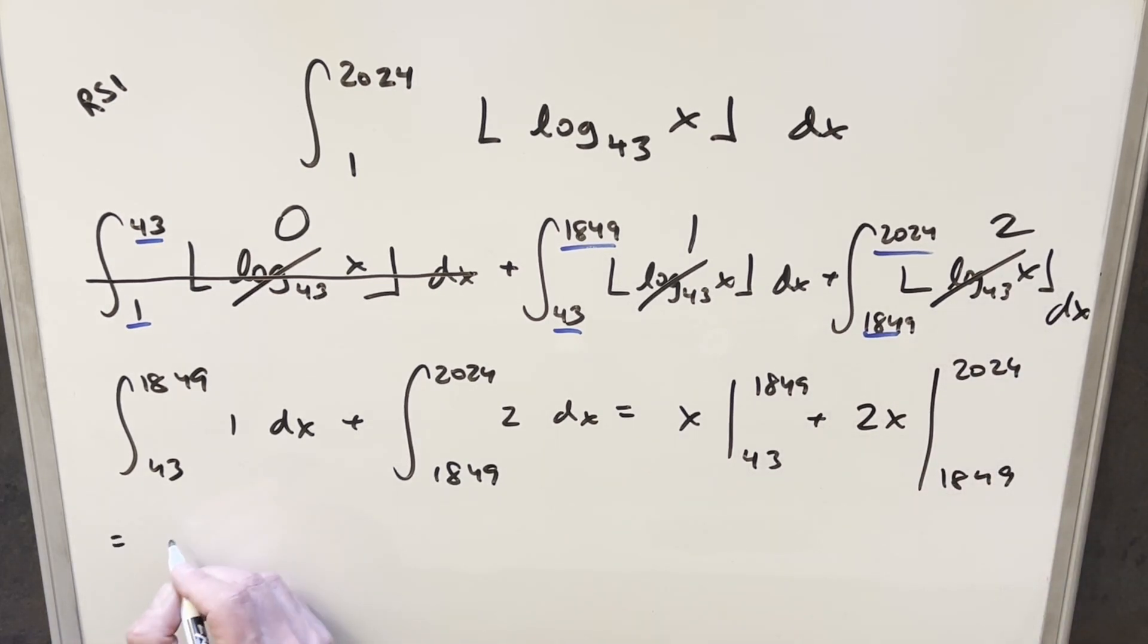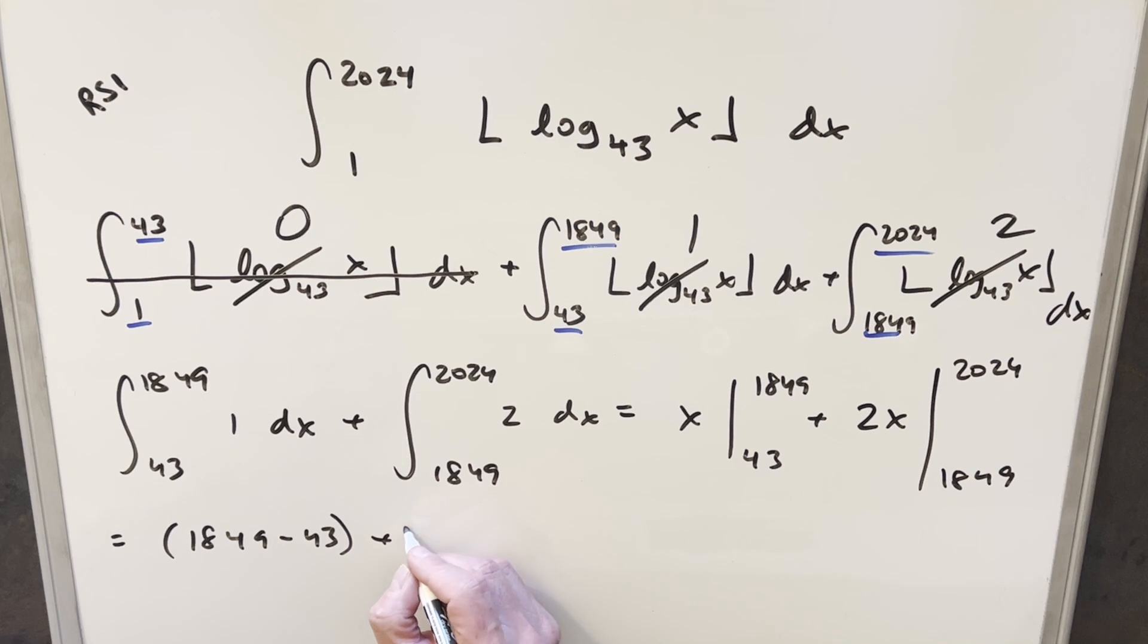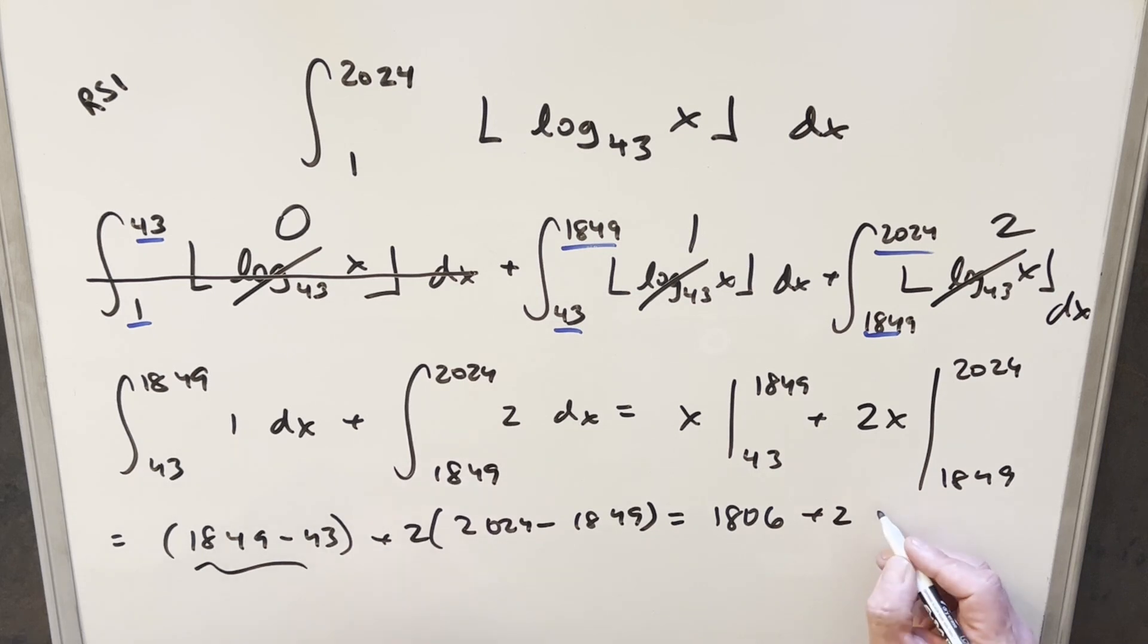So just evaluating this really quick, for the first one, we're going to have 1849 minus 43. And for the second one, we'll have 2 times 2024 minus 1849. This first value here, this is going to be 1806. And then here for the second we're going to have 2 times, this value is actually 175. 2 times 175 is 350.